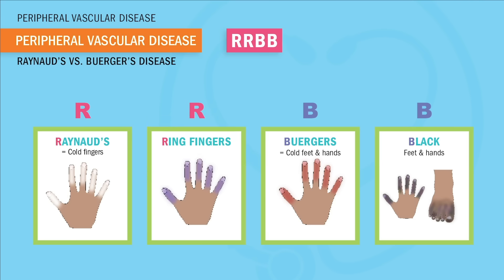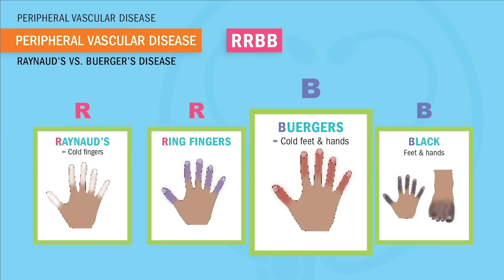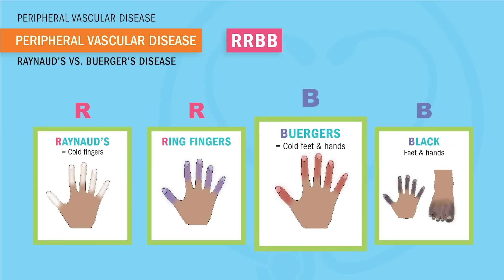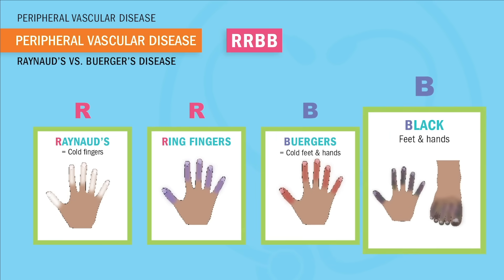Similarly, B for Buerger's disease — we have cold feet and hands, but usually in the feet. Remember B for bare feet and hands. This disease is more common in men, worsened by smoking, and usually ends with amputation of the hands or feet, called auto-amputation. Teach your patient to quit smoking, which destroys the small blood vessels, and avoid trauma to the feet by wearing well-fitted shoes — nothing too tight.